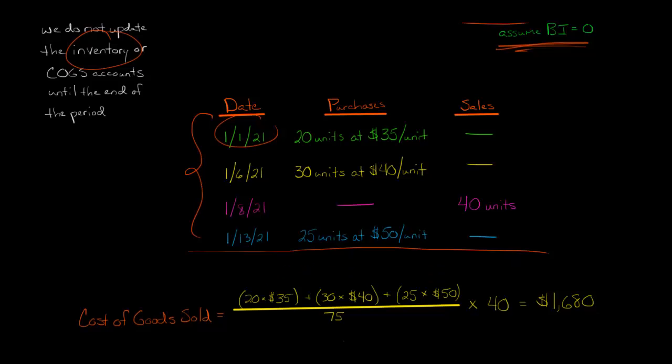Now, we get this $3,150 divided by 75. If you divide that, you actually get $42. So $42 a unit, that is the weighted average cost per unit. And then we multiply that by the number of units that were sold, which is 40 units, and that gives us $1,680. That is our cost of goods sold for this period.